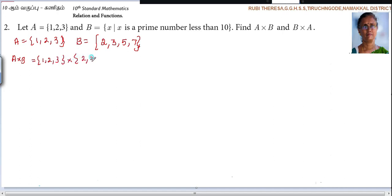Then B set: 2, 3, 5, 7. A cross B means what? It is the Cartesian product of A and B. That is set of ordered pairs.